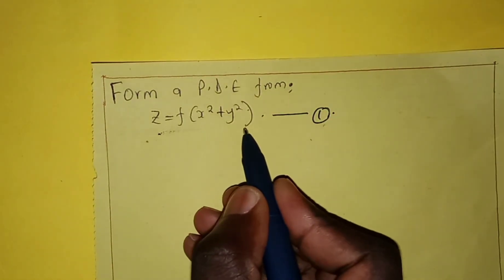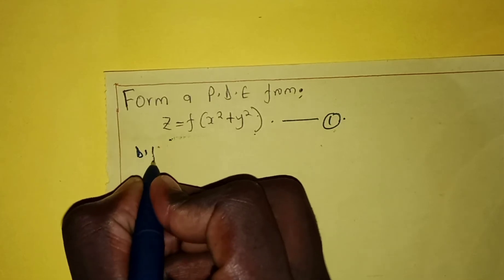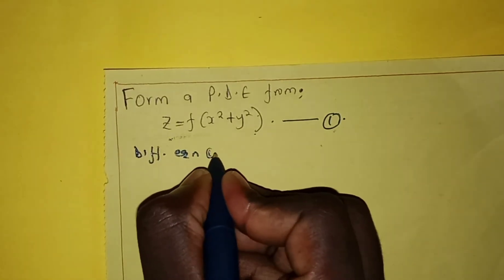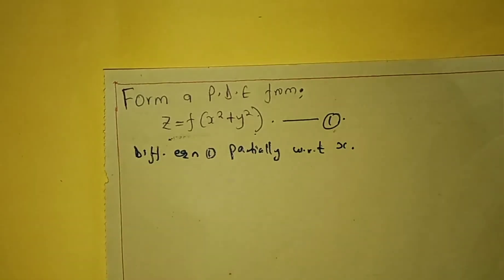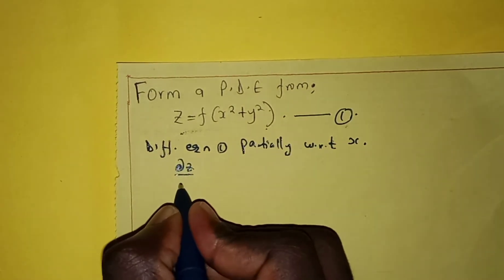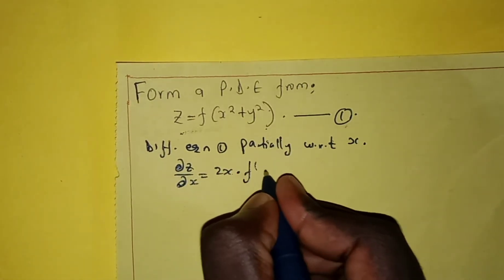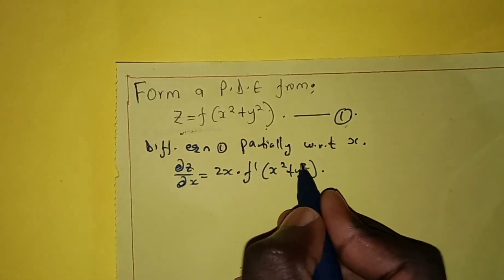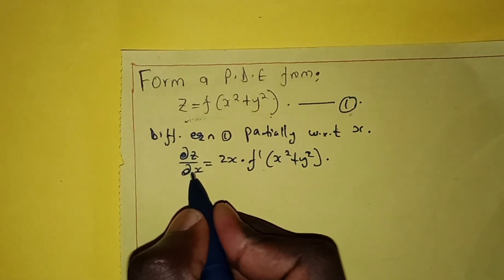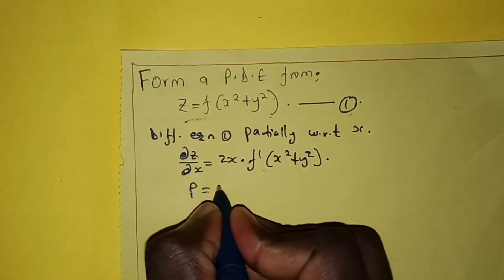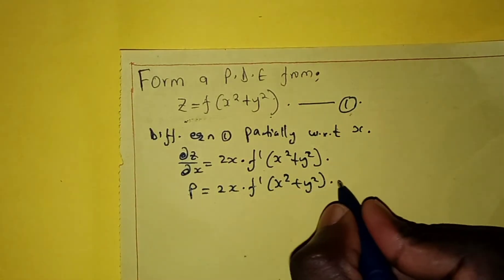This part here is our arbitrary function. First step, we differentiate equation one partially with respect to x. We'll have partial z over partial x equals differentiating this. We'll get 2x times f prime of x squared plus y squared. Since partial z over partial x is the same as p, we have p equals 2x times f prime of x squared plus y squared. We call this equation number two.